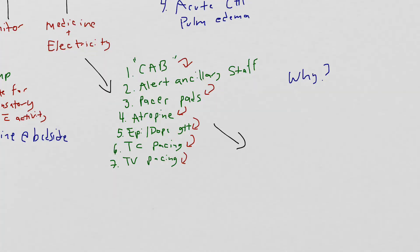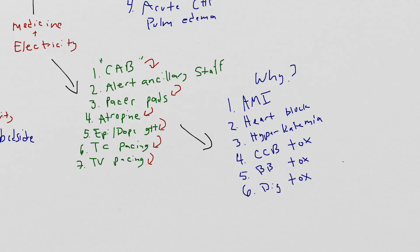And while this is all going on, you should always be asking yourself, why? Why is this patient bradycardic? Are they bradycardic from an inferior or right-sided MI? Do they have second degree or third degree heart block?